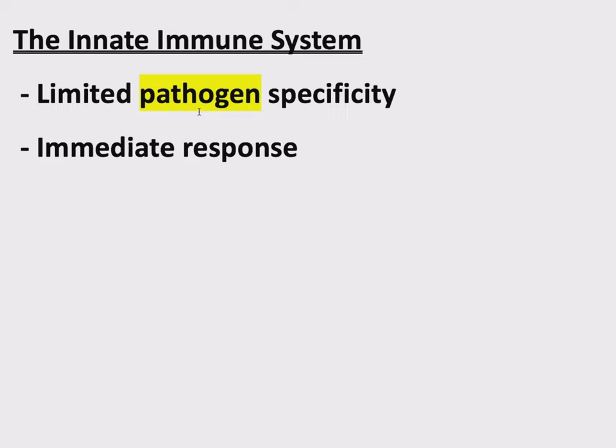The innate immune system is, however, very immediate. The other immune system is going to take a little bit longer, but this is much faster, though not as specific. The first part I want to talk about is actually the largest organ of the human body — a fun trivia question. The largest organ is the skin.